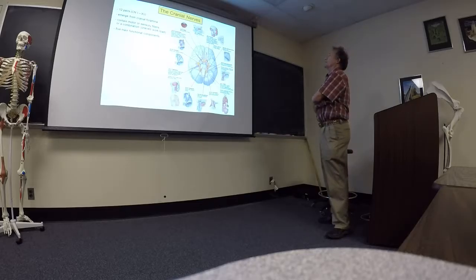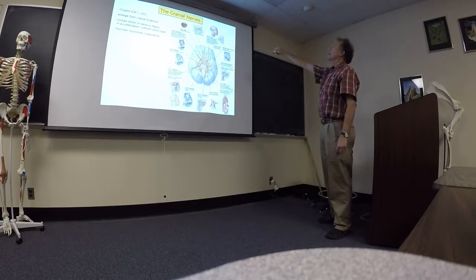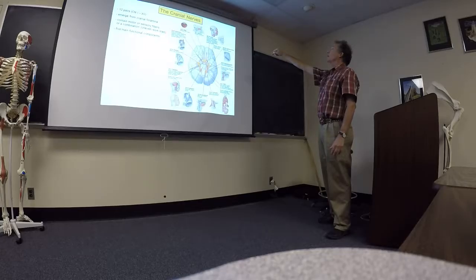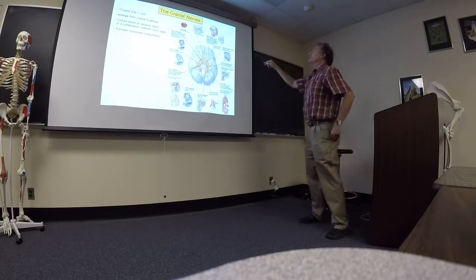So, there are 12 pairs. There's one on each, for each cranial nerve, there's a right and a left. Starting with number one, the olfactory nerve. Number two, the optic nerve. You can figure out this is smell. This is vision. These are referred to as special sensory.